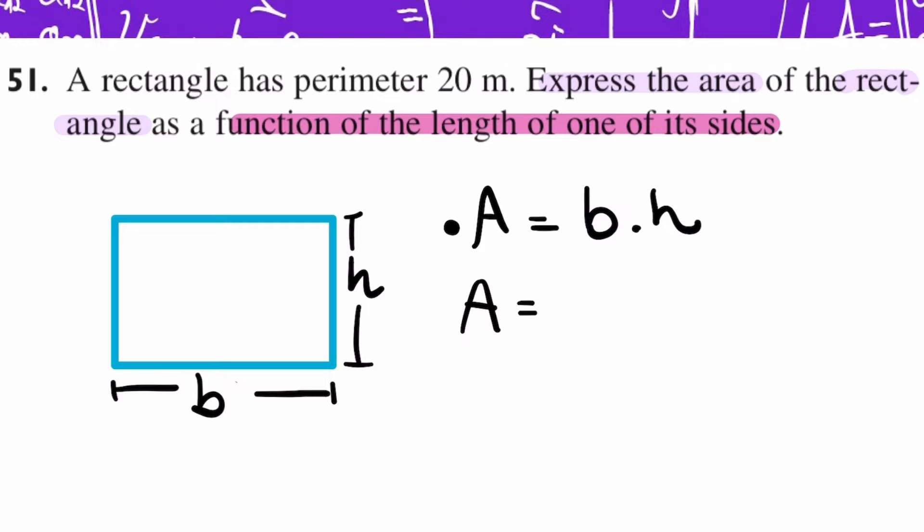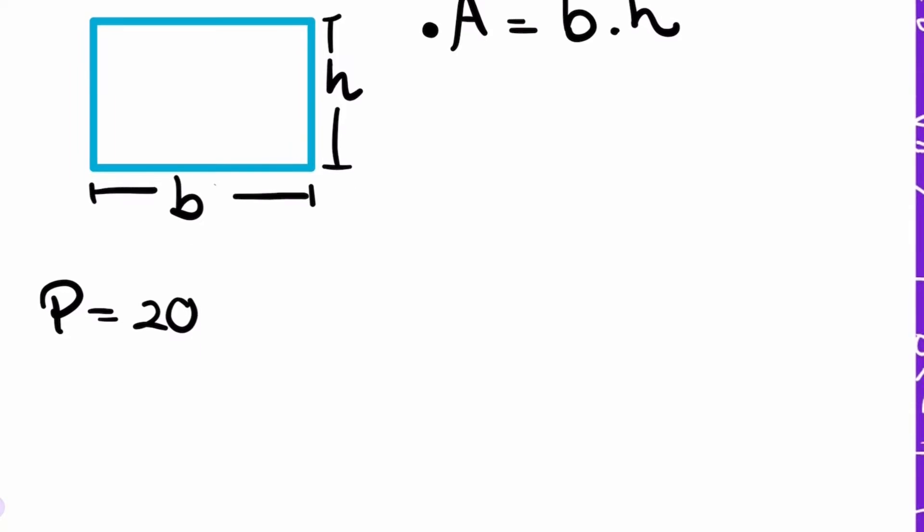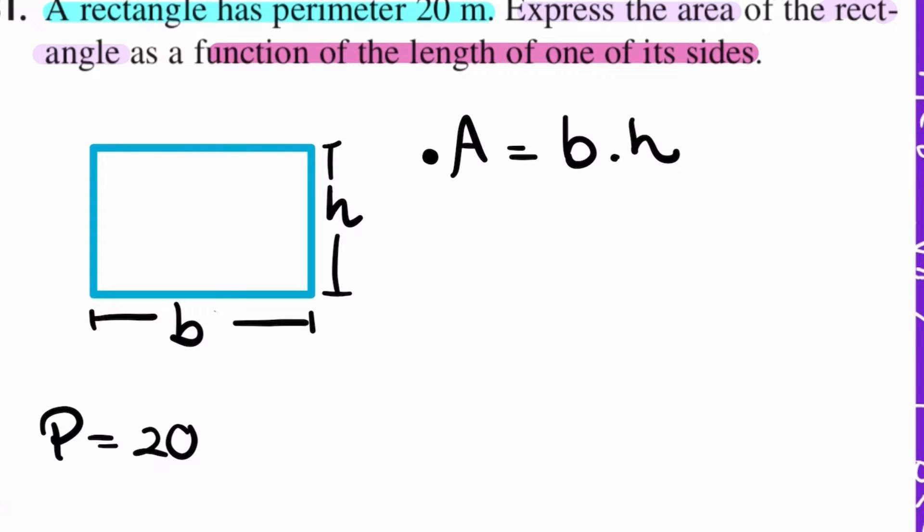In this type of exercise, they always give us a hint that we need to use, which in this case is this one: a rectangle has a perimeter of 20 meters. Perimeter is the sum of all of its sides. I know that this side is also called h, and this side is also b, because they are parallel, and the rectangle has two sides equal, and the other two sides are the same.